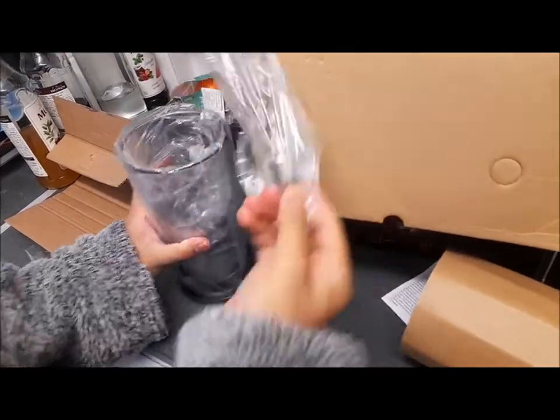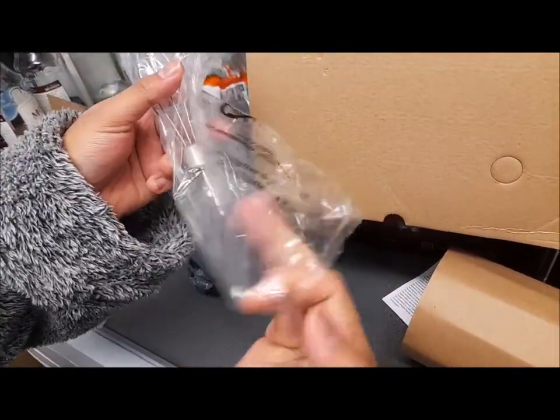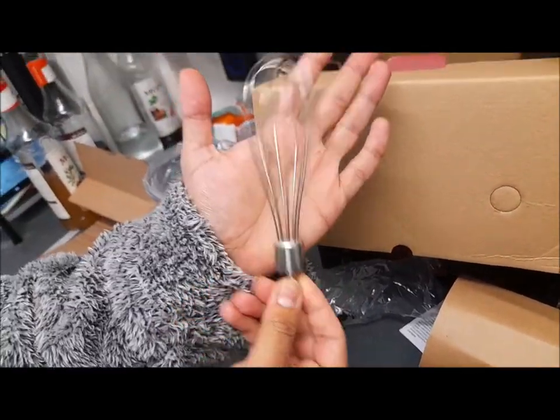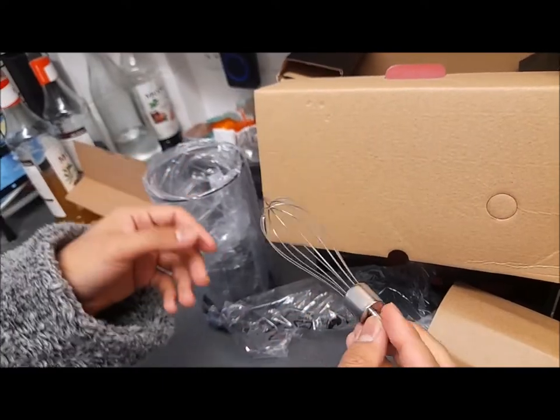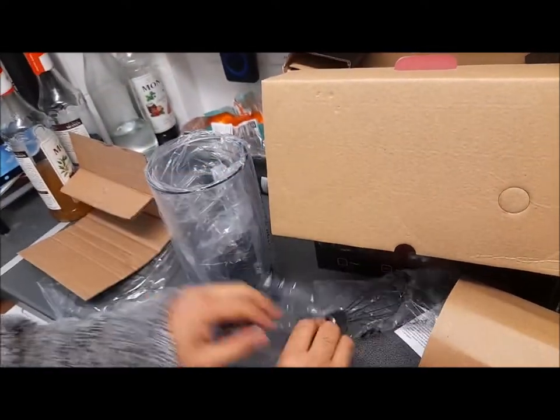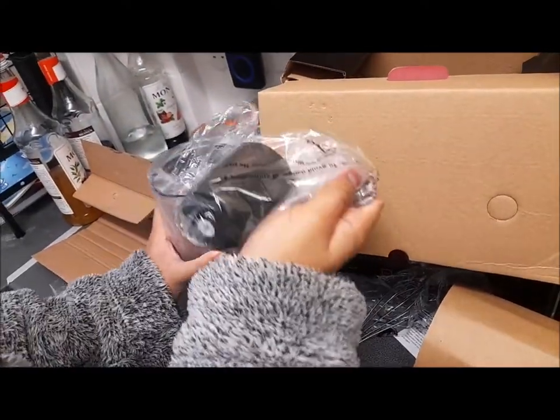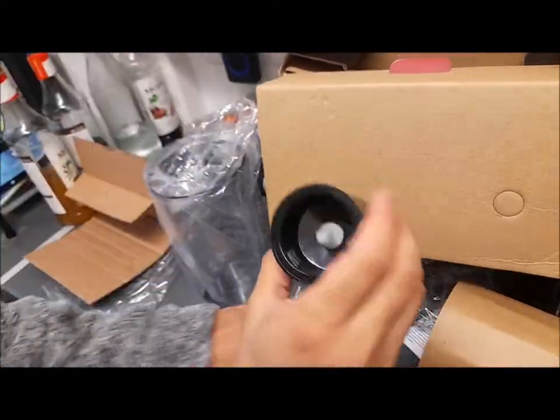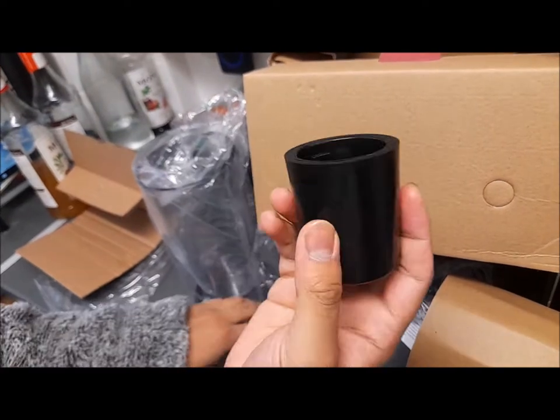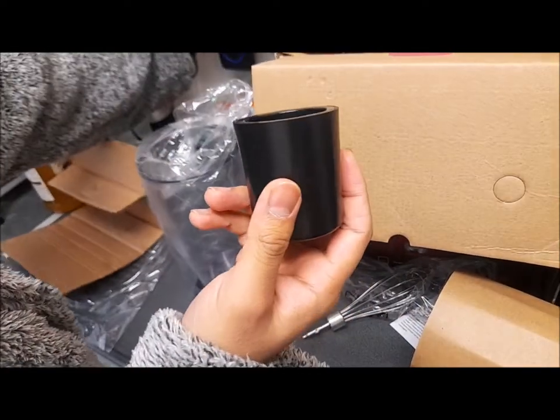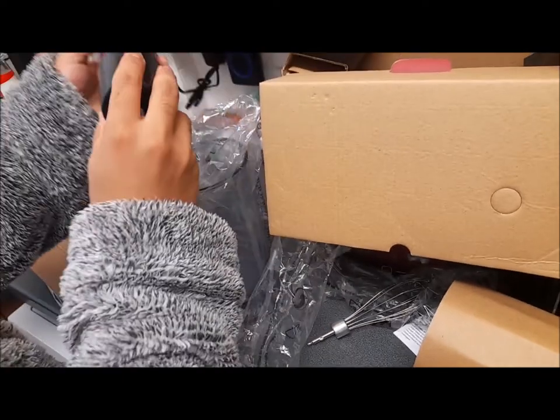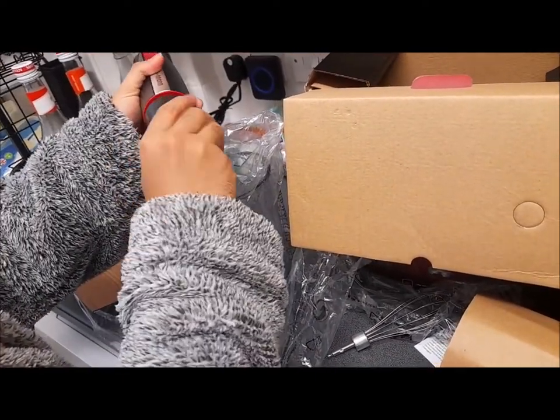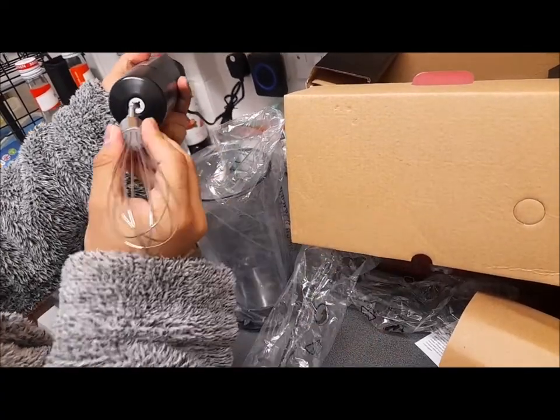So you can see we have our lovely whisk. It's nice and miniature. It seemed big in the box, but very small, very, very small actually in comparison to what it seems like. This is the whisk attachment. Let's try this out. So back to the power, put the attachment on.